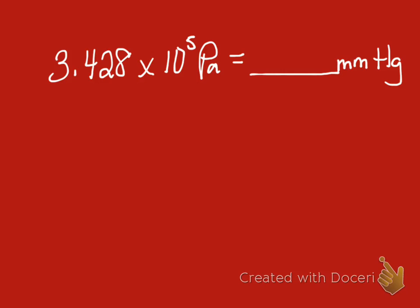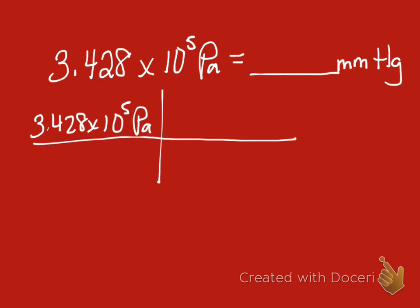We have 3.428 times 10 to the 5th pascals, and we'd like to know what that pressure reading is in millimeters of mercury. As always, we start with our given, and then we're going to plug in our units to cancel and end up in. We have our units in, and we know that 760 millimeters of mercury is equal to 1.01325 times 10 to the 5th pascals.